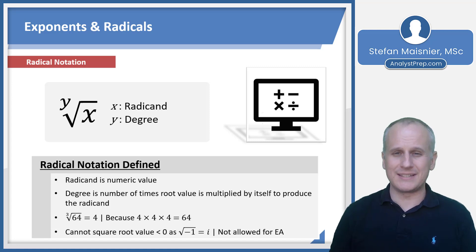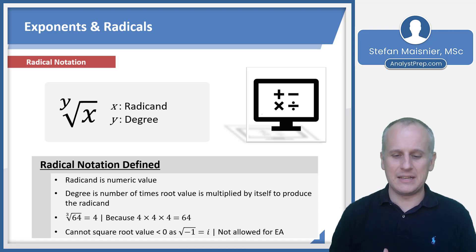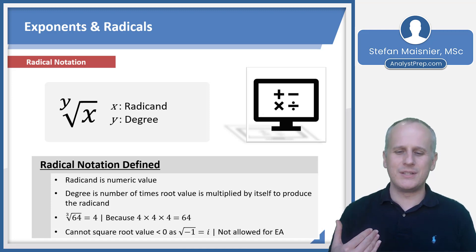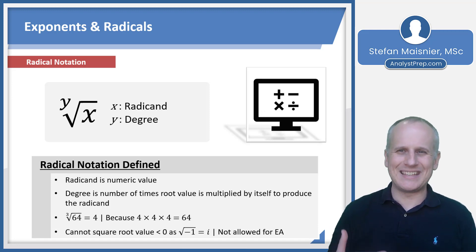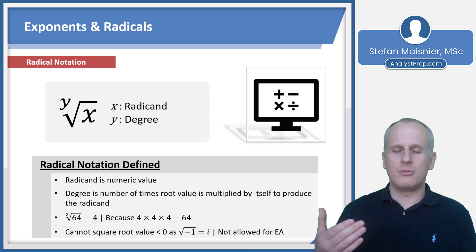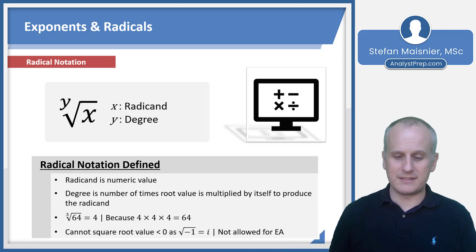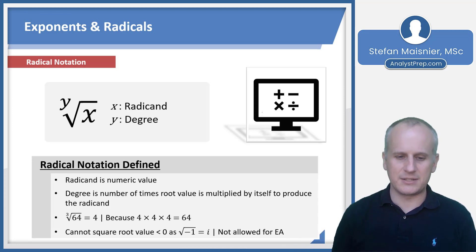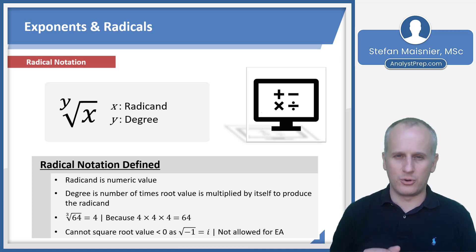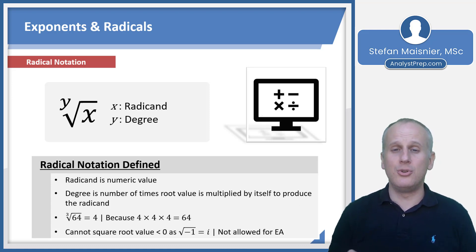You cannot take the square root of a value less than zero on this exam, because that produces a non-real number. The exam is only concerned with real number values. If you square root a negative, you get what is known as an imaginary number, because you can't obtain a negative by multiplying something by itself — a negative times a negative is positive, and a positive times a positive is positive. If there is no degree outside the radical symbol, you are square rooting, splitting the radicand into its two equal factors and taking one.